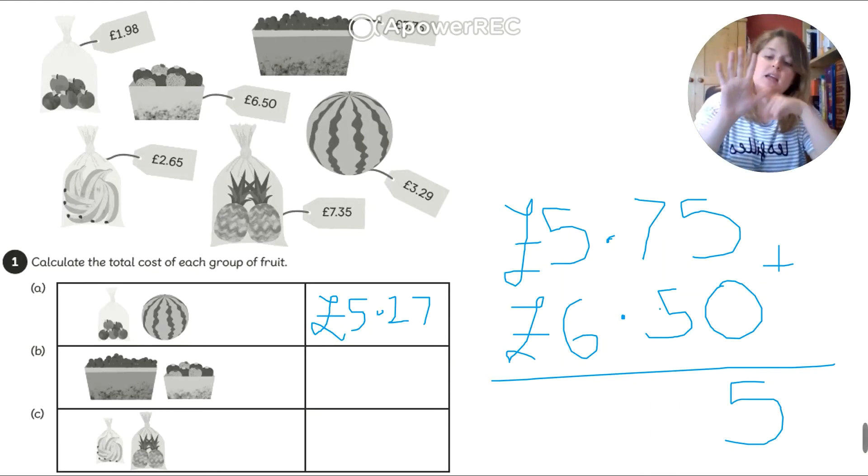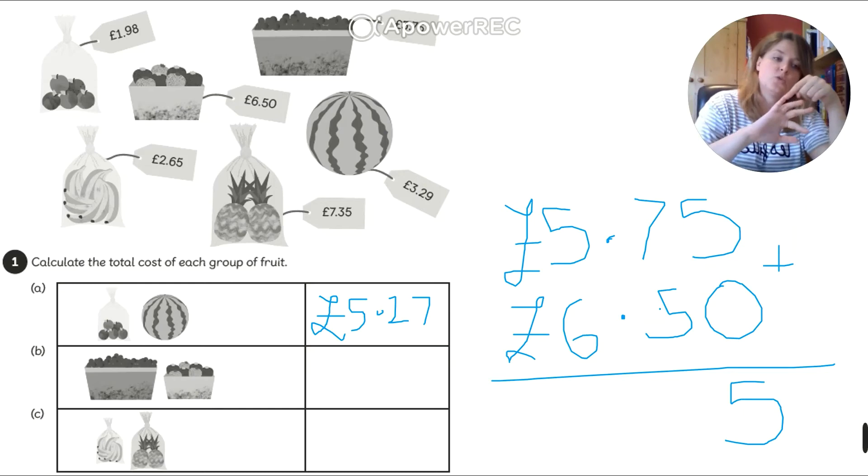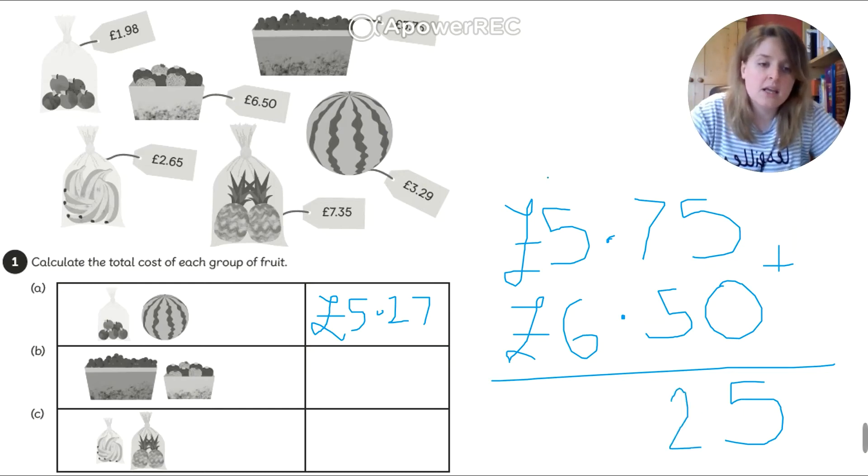7 add 5. 7 in my head. 7, 8, 9, 10, 11, 12. So my 2 comes here. Carry my 1 and my points. Keep it in. Don't want a bunch of fruit that cost me a fortune.